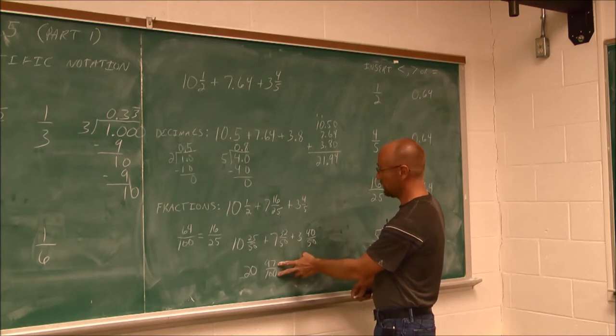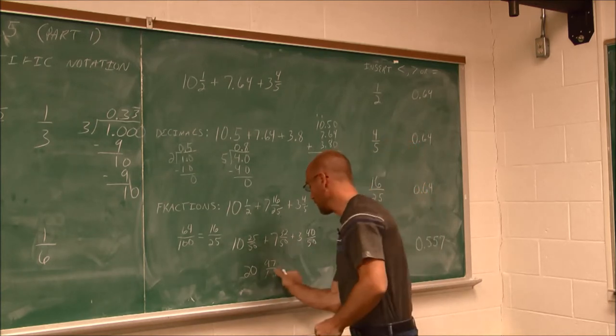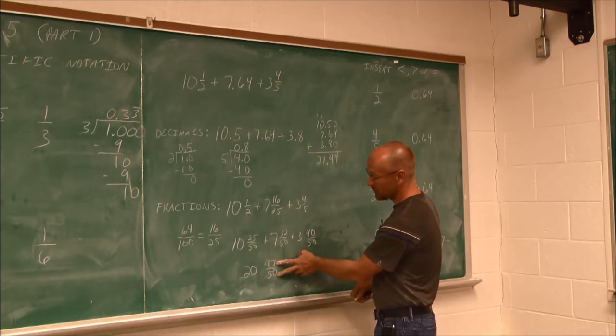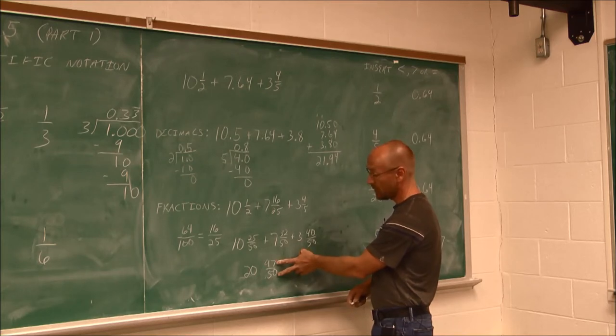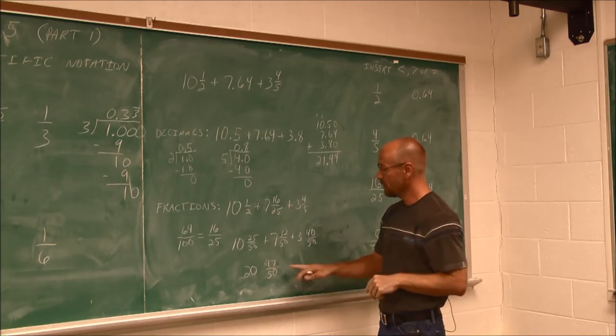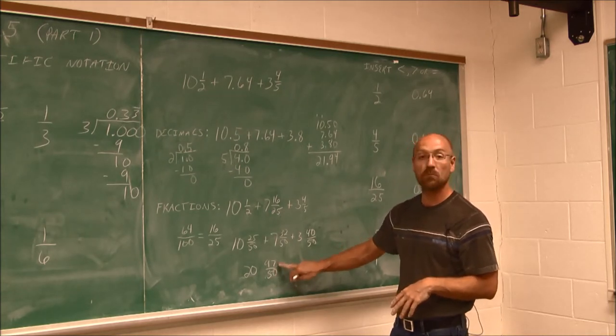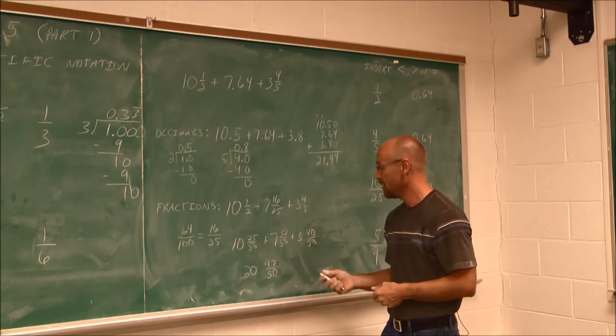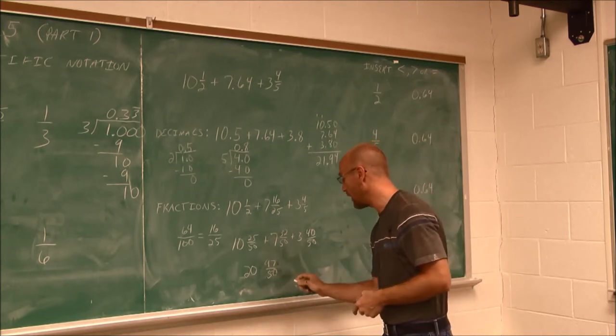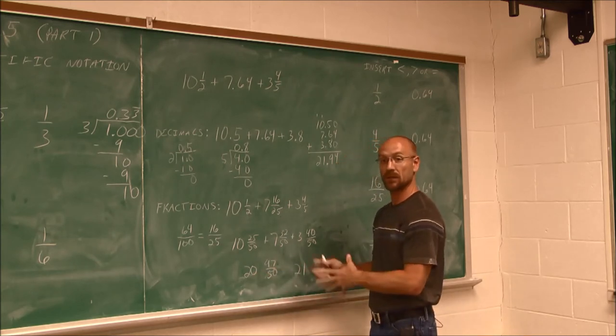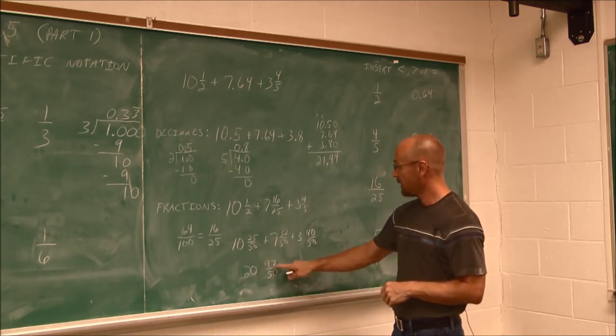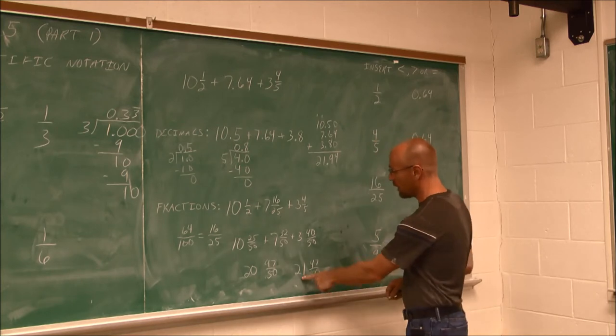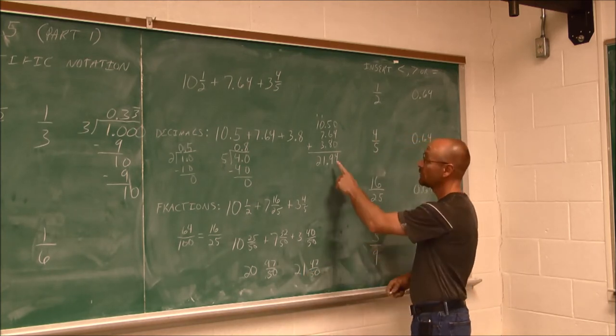I noticed that this is an improper fraction. I want to have a proper fraction. 50 goes into 97 one time. So I can pull one out and add it to this whole number. Then subtract 50 from this, and that'll give me 47 fiftieths. So 21 and 47 fiftieths should be the same as that.